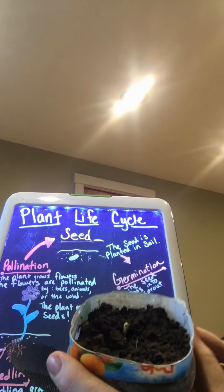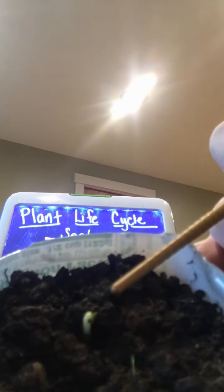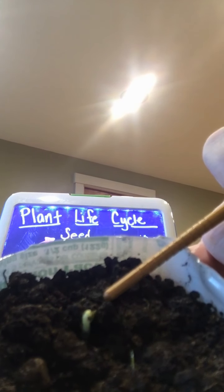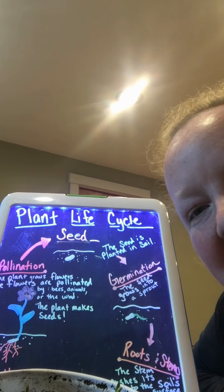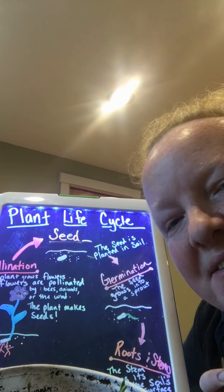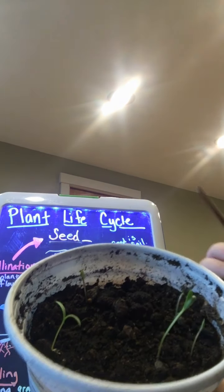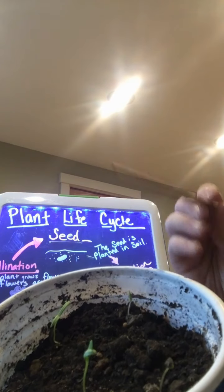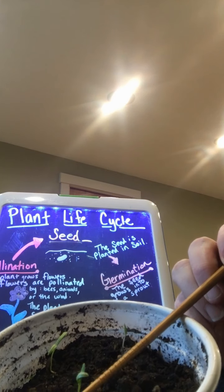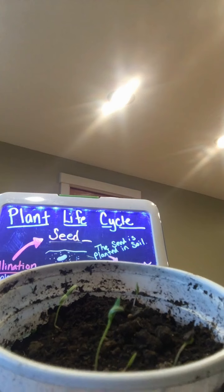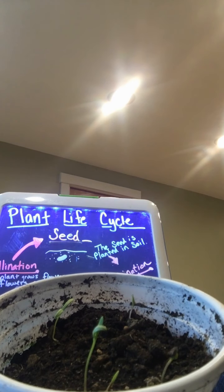Once the seed is nice and warm and it has some water, it will start to germinate. Germinate just means it's coming out of its little seed and just barely coming up out of the soil. You can see that this is a plant that is starting to germinate. Once a seed germinates and it gets sunlight and some water, it will start turning into a seedling. Some of you planted some of these last year — this is a tomato plant that is starting to grow, so this is a seedling, like a baby plant.